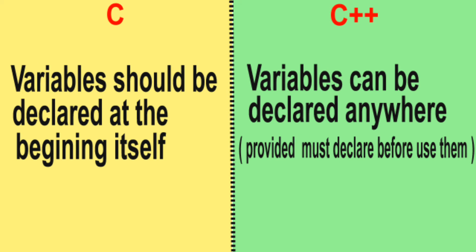Difference number 7: In C, variables should be declared at the beginning itself. In C++, variables can be declared anywhere, provided you declare them before using them.